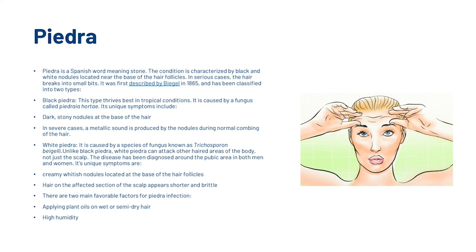White piedra is caused by a species of fungus and, unlike black piedra, can attack other areas of the body, not just the scalp. The disease has been diagnosed around the pubic area in both men and women. Its unique symptoms are creamy whitish nodules located at the base of the hair follicles. Hair on the affected section appears shorter and brittle. Two main favourable factors for piedra infection are applying plant oils to wet or semi-dry hair and high humidity.